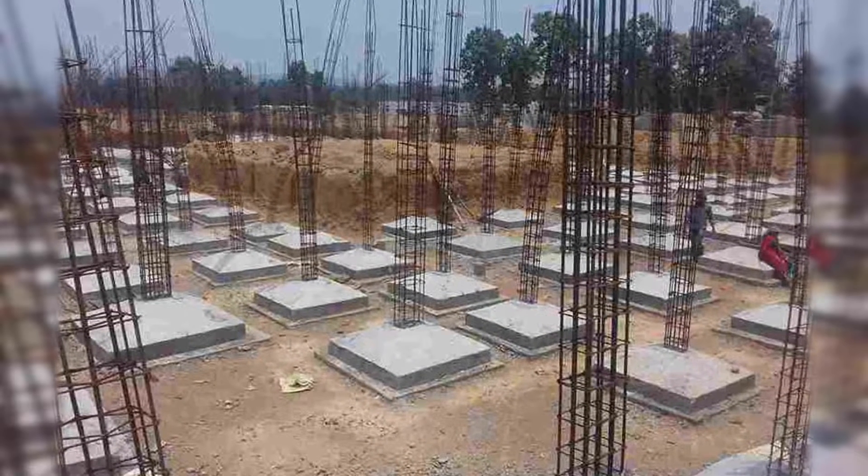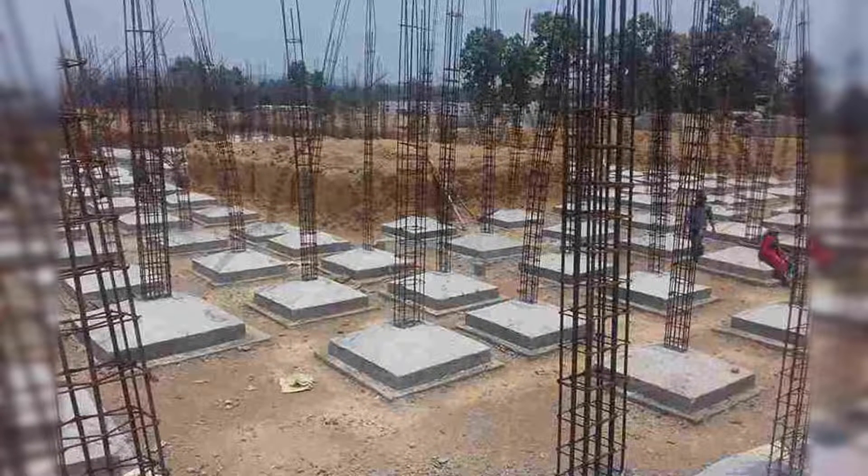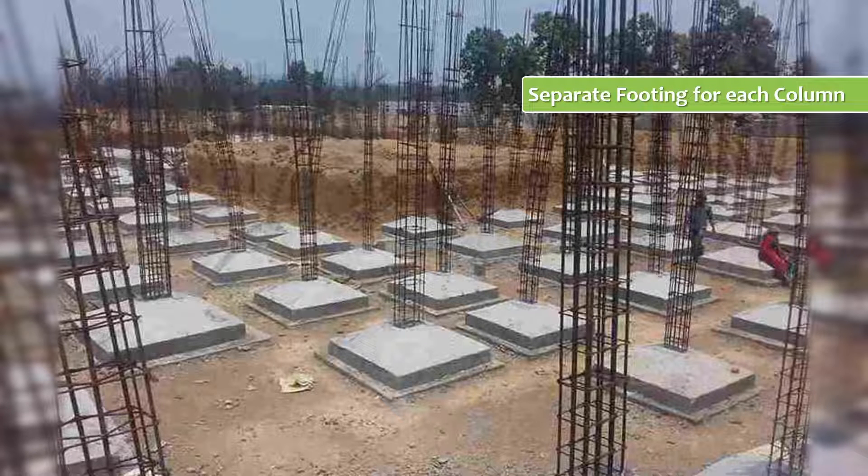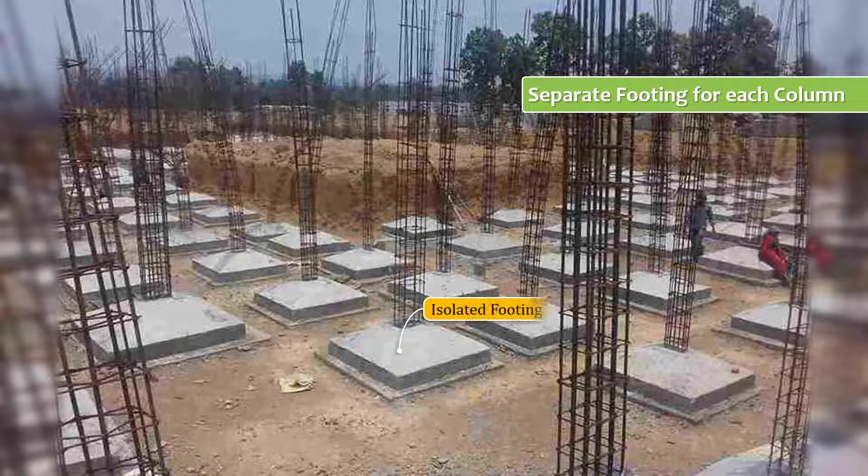Generally for ordinary structures located on reasonably firm soil, it is usually sufficient to provide a separate footing for every column. Such a footing is called an isolated footing.